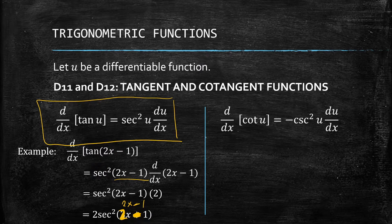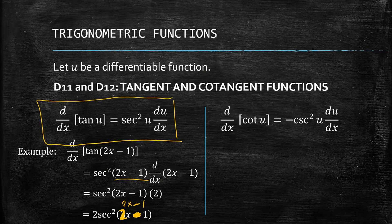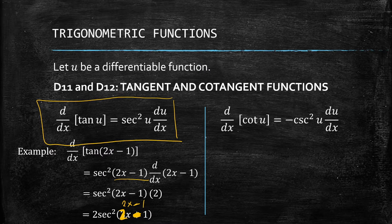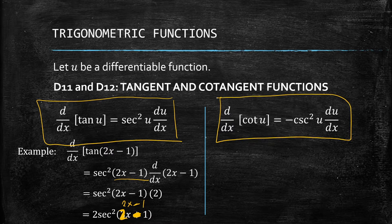For D12, we have the derivative of cotangent of u. Cotangent is the reciprocal function of tangent. Since it's the reciprocal, the derivative is negative cosecant squared of u times du/dx. Observe that for tangent the paired function is secant, and for cotangent the paired function is cosecant.